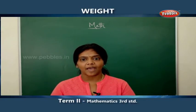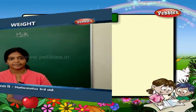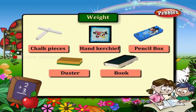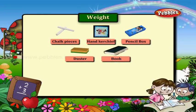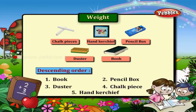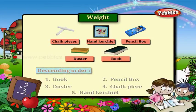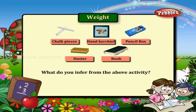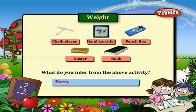We also have other apparatus to measure weight. Look at these pictures. List out the objects in descending order based on their weight: Book, Pencil box, Duster, Chalk piece, Handkerchief. What do you infer from this activity? Every object has its own weight.